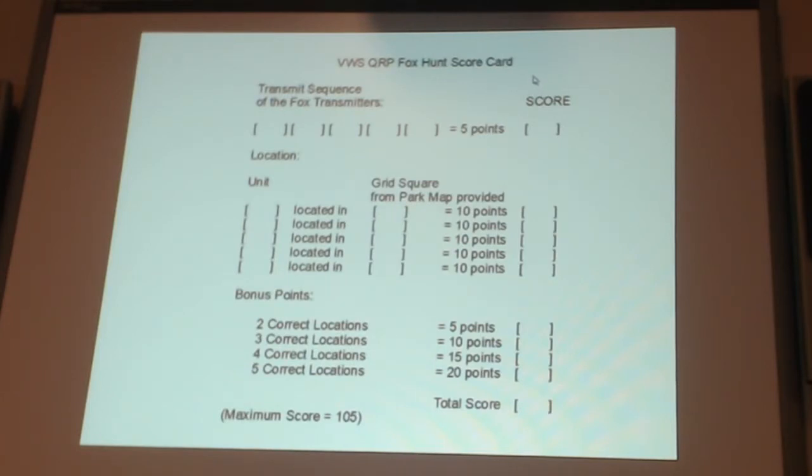Just as an example of what you could do to score these, the first item is really the transmit sequence of the FOX transmitters. What you place up here are simply the order in which you hear the transmitters. For example, if you heard MOE first, then this would be MOE. If the next one you heard was MO5, you could put that in here. If you did it correct, remember these are just rotating around, so it doesn't matter which one you start with. If you get that sequence correct, you give yourself five points. The nice thing is you can do this even while you're eating a hamburger with your HT.